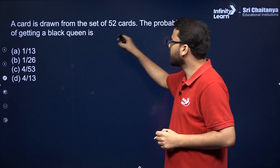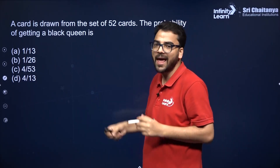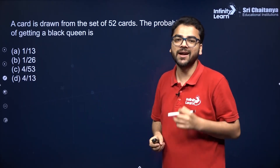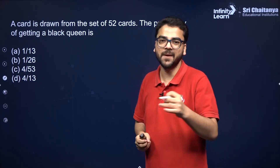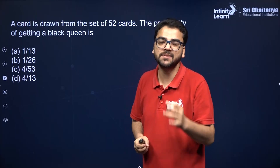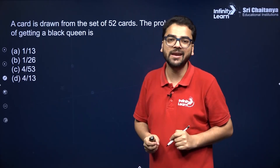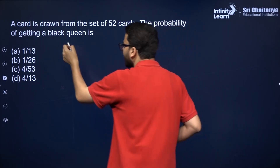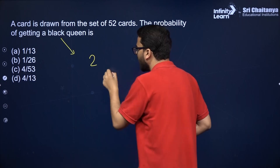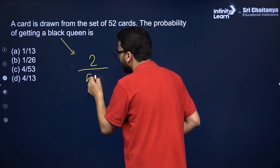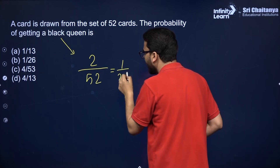A card is drawn from a set of 52 cards. The probability of getting a black queen — the black cards are spades and clubs, 13 spades and 13 clubs. One queen will be in spades and one queen in clubs. So the probability of getting a black queen is 2 favorable outcomes upon 52 total outcomes, giving 1 by 26.